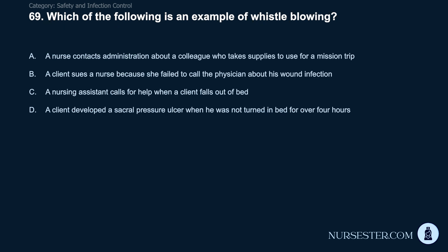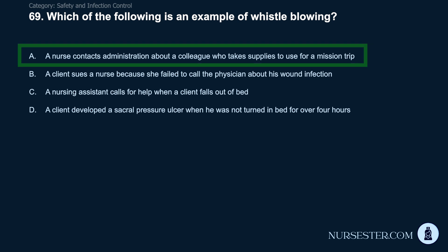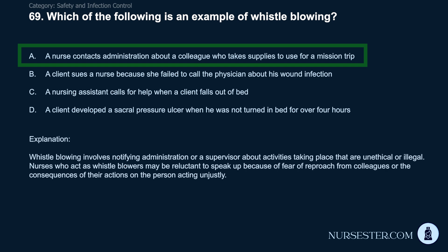Question 69: Which is an example of whistleblowing? A) A nurse contacts administration about a colleague who takes supplies to use for a mission trip. B) A client sues a nurse for failing to call the physician about a wound infection. C) A nursing assistant calls for help when a client falls out of bed. D) A client developed a sacral pressure ulcer when not turned in bed for over 4 hours. Correct answer: A. Whistleblowing involves notifying administration about activities that are unethical or illegal. Nurses who act as whistleblowers may be reluctant to speak up due to fear of reproach from colleagues or consequences on the person acting unjustly.